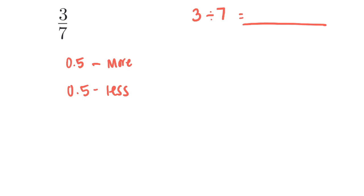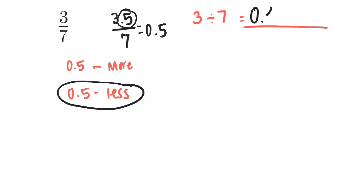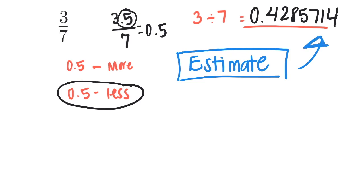Thinking about 3 over 7 — half of 7 would be 3.5, so 3.5 over 7 would give me 0.5. But I don't have 3.5, I have 3, so I'm going to say it's going to be less than 0.5. If we do this on our calculator, we'd find it equals 0.4285714, which is less than 0.5. This is a great habit — estimate your answer first, then check whether your result makes sense.